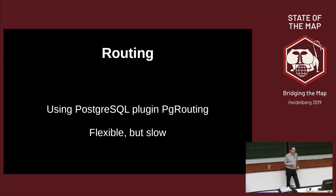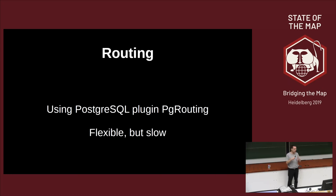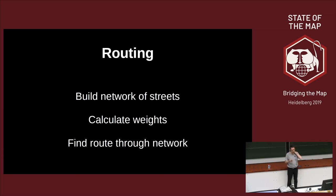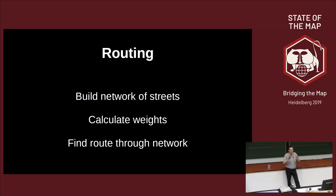Routing is another use case. Most routing nowadays is not done in Postgres, but it can be. There are specialized routing engines like OSRM and GraphHopper that are much faster, but if you have a very special use case there is a pgRouting plugin for Postgres. It needs a completely different data model: building a network of streets, calculating the cost of traveling each edge depending on time, and then finding routes through that network.